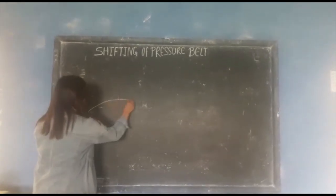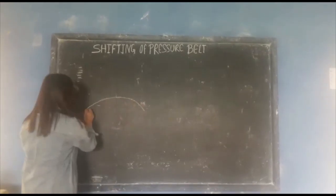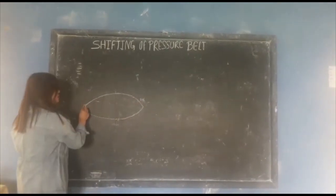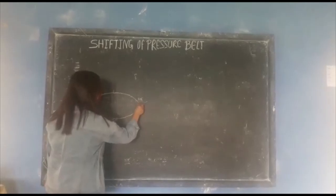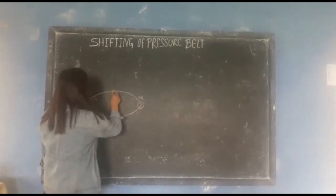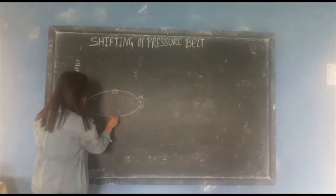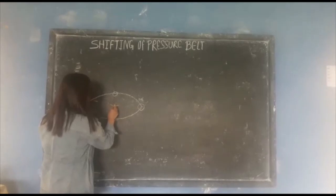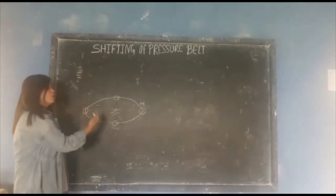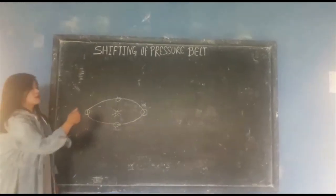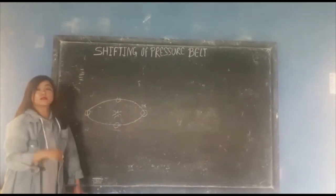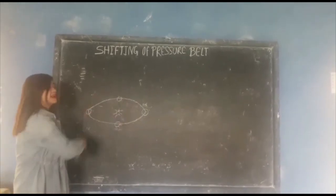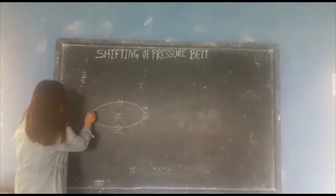The elliptical orbit is the path or way on which our Earth moves and revolves around the sun. Our Earth revolves around the sun in an elliptical orbit in an inclined position.